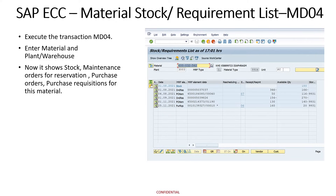At the end, it is showing that 20 pieces of that item will be available after all these requirements.